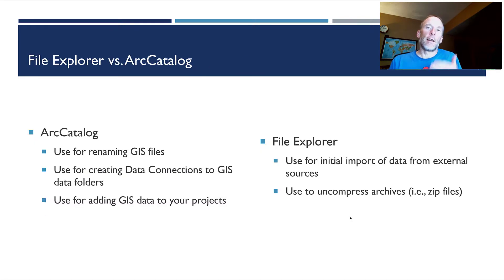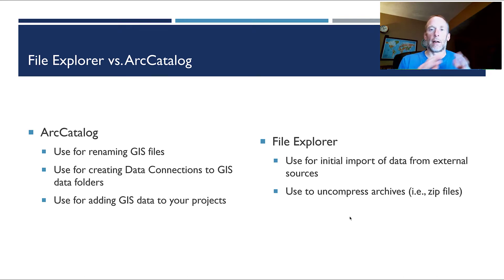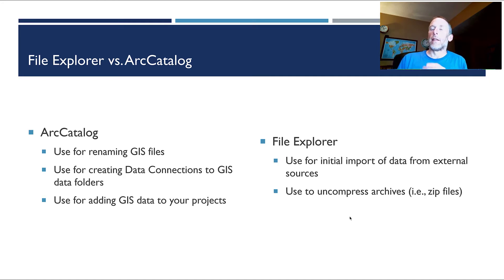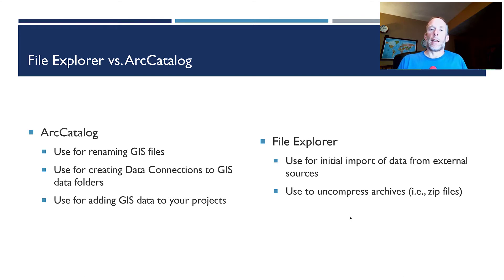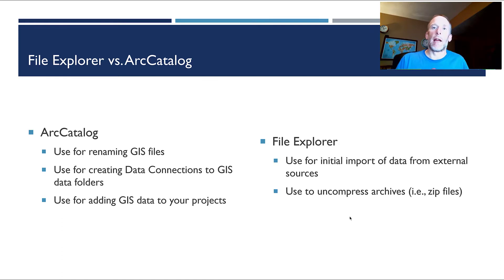ArcCatalog is the tool you're generally going to want to use if you need to rename your GIS files. It's also the tool you use to create data connections to GIS data folders — sort of like a shortcut to a specific GIS data folder — and to add data into different projects and maps. Windows File Explorer is used when you're initially importing data, uncompressing zip archives, and filing it in the right place. Once that's done, you go to ArcCatalog to rename and add it to your map.